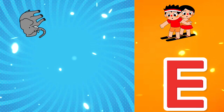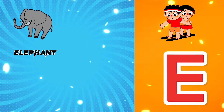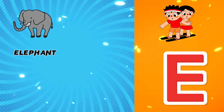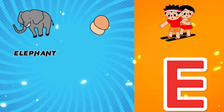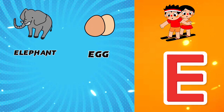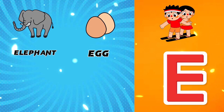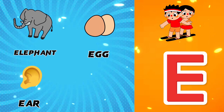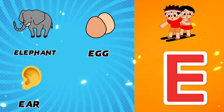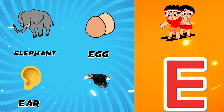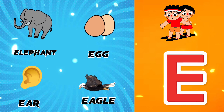E is for Elephant. E is for Egg. E is for Ear. E is for Eagle.